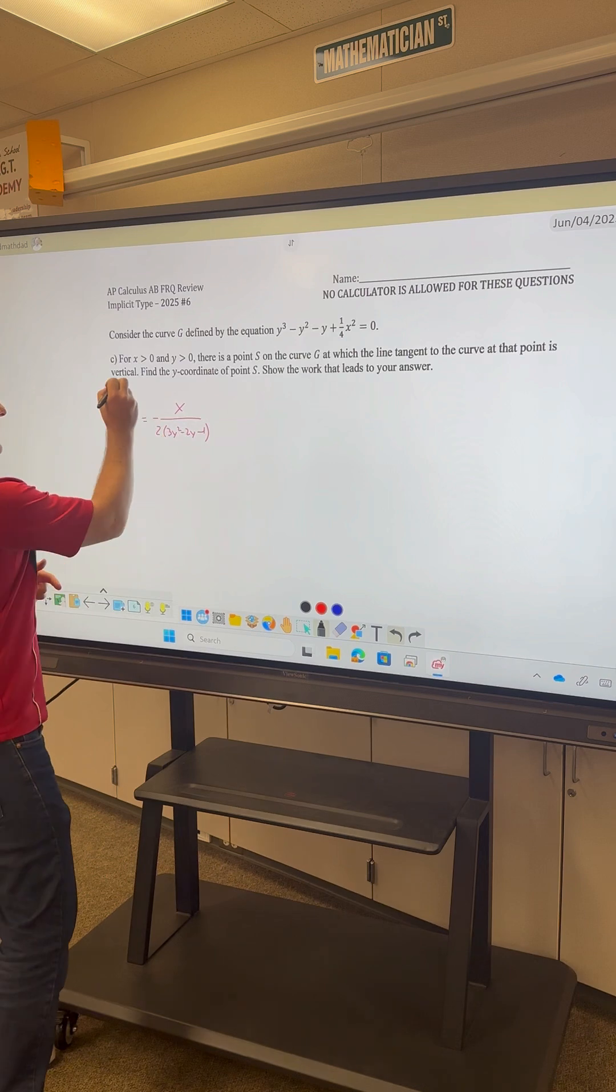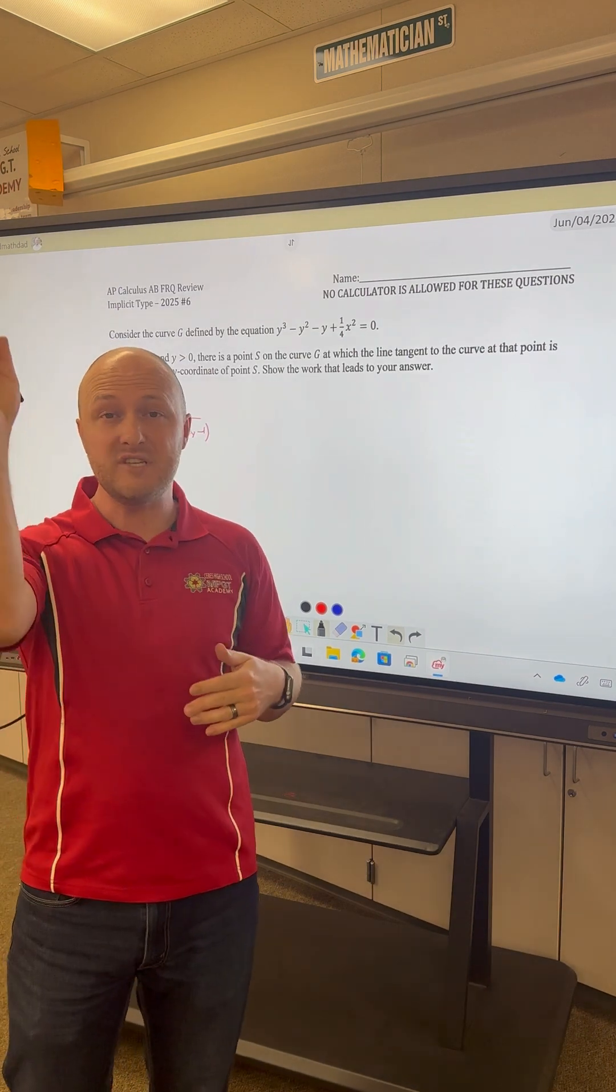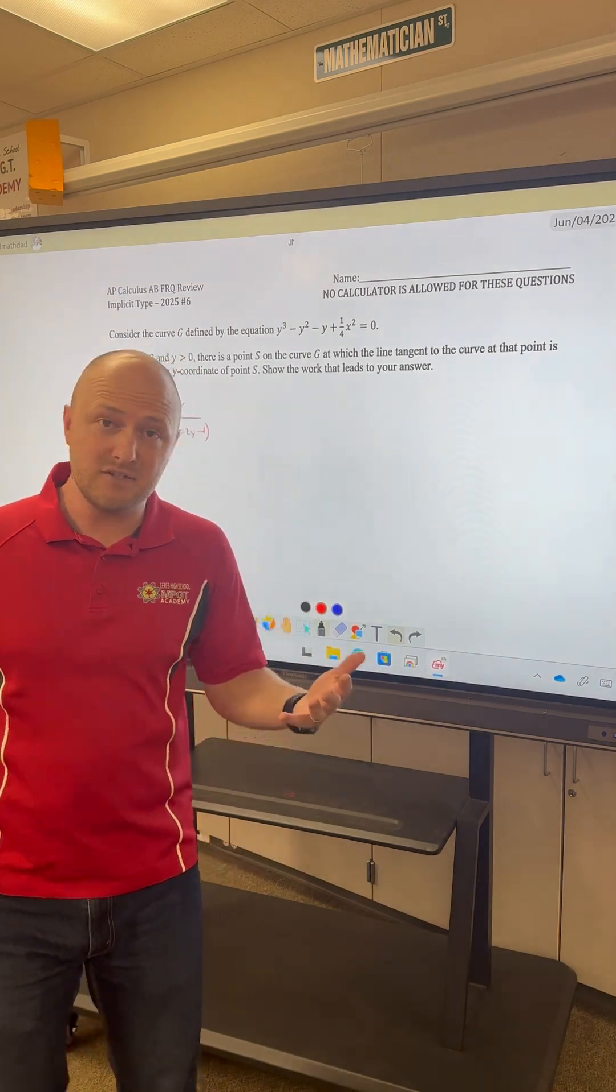Well, in order to have a vertical tangent line, that means that the slope is undefined. In part A, they gave us the slope.